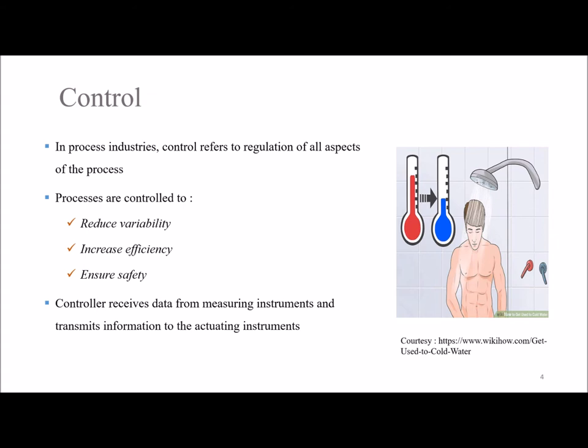Control systems help reduce the variability in production while increasing the efficiency of operation and ensuring safety. Basically, controllers compare the data they get from measuring instruments called sensors with the expected or desired set point and respond accordingly.